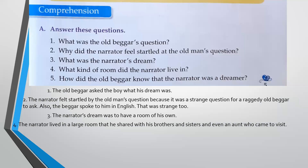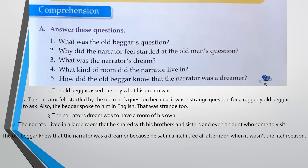The fifth one, how did the old beggar know that the narrator was a dreamer? Was it easy to guess that this boy was a dreamer — that he was fond of daydreaming? The answer: the old beggar knew that the narrator was a dreamer because he sat in a lychee tree all afternoon when it wasn't the lychee season. So why would someone sit in a tree when he wasn't picking lychee? Obviously, he was dreaming.